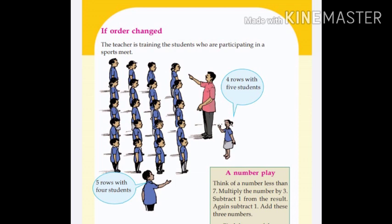Why are the children saying differently? There are 2 students. If you see them, they are different because they are standing on different places. If you are standing on one side, you see it one way; if you are standing on the other side, you see it differently.